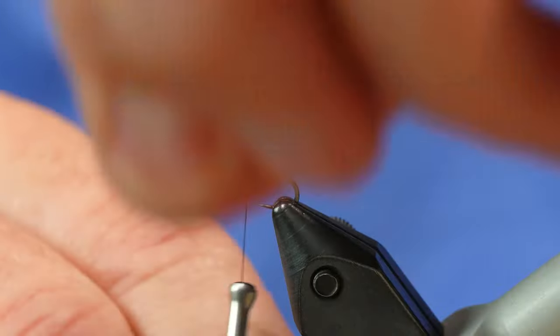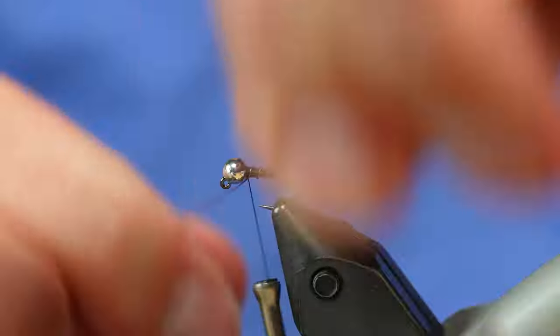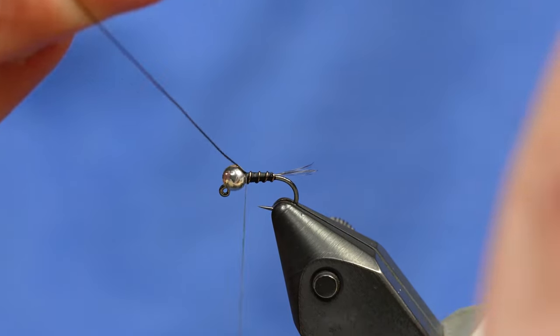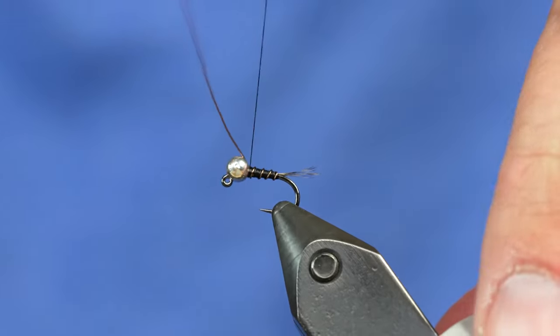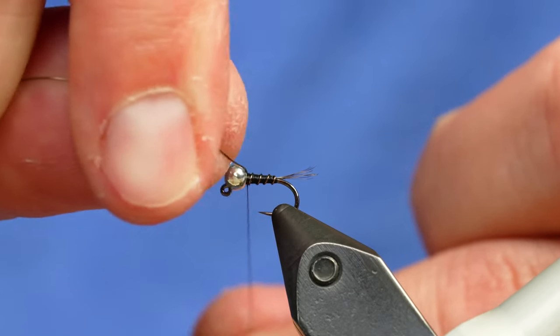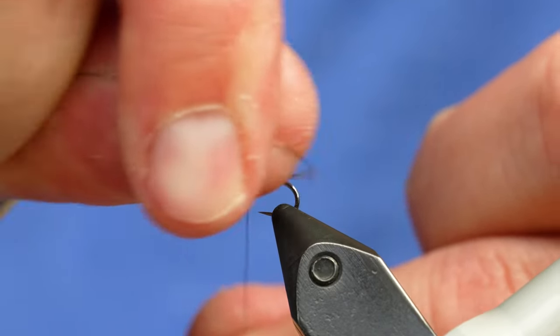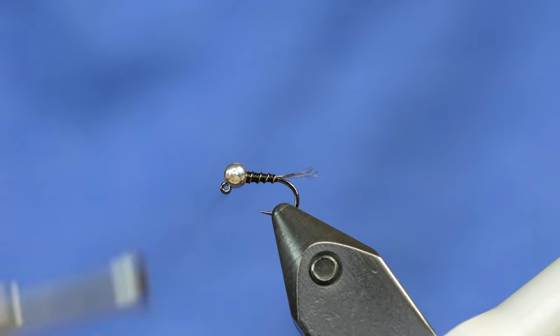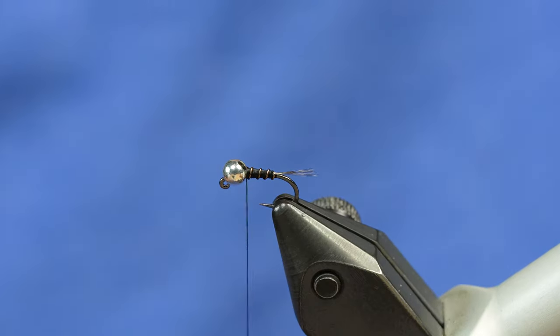Then we're just going to rib the fly with the wire, just spacing out wraps. Three or four turns is usually plenty. Capture it behind the bead. I oftentimes tie these pretty short. You could tie that tail down the shank a little further if you'd like, but I tend to like mine short. That way they fish a little smaller per size of hook. So I wiggle off the wire.